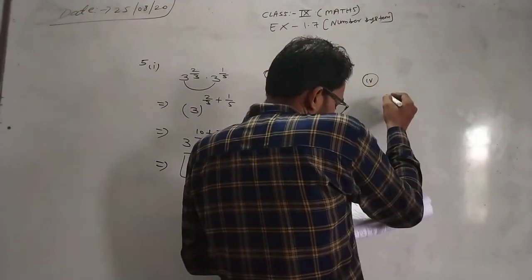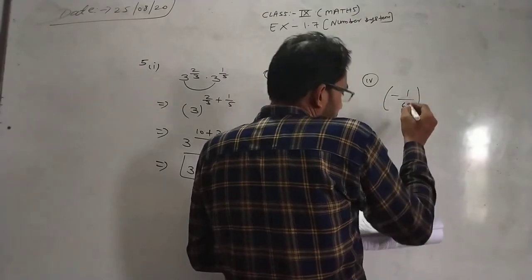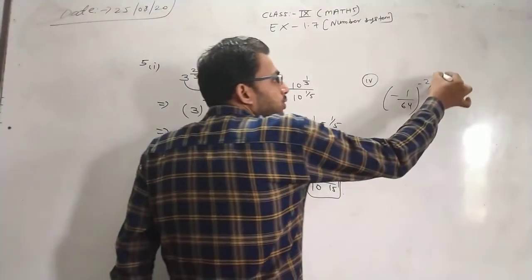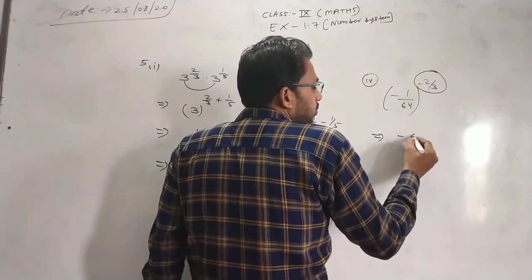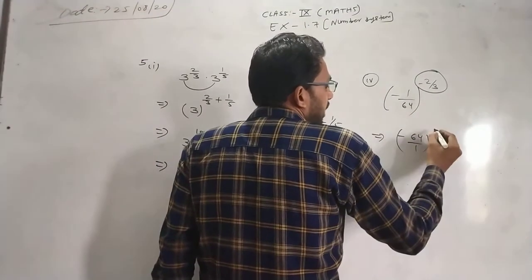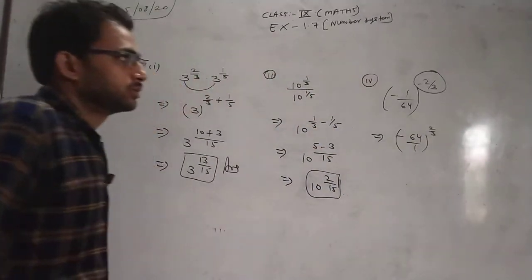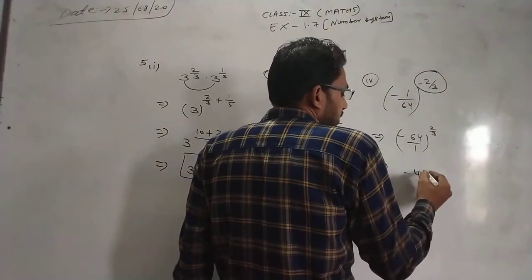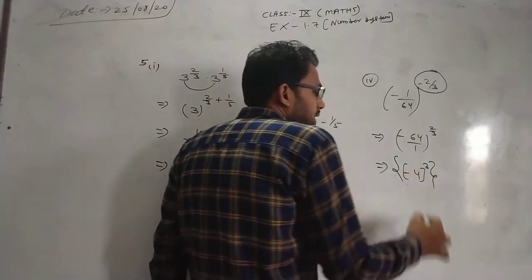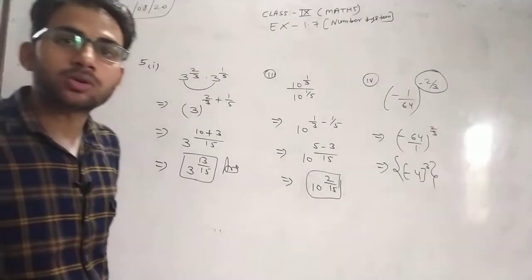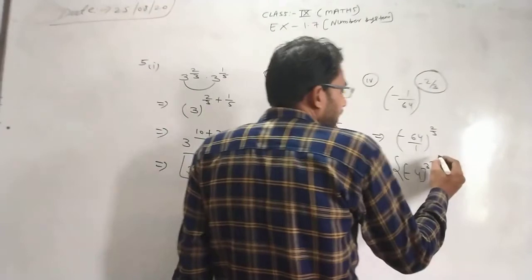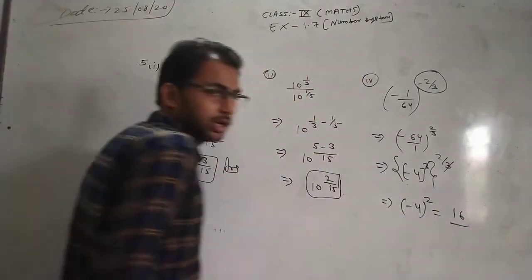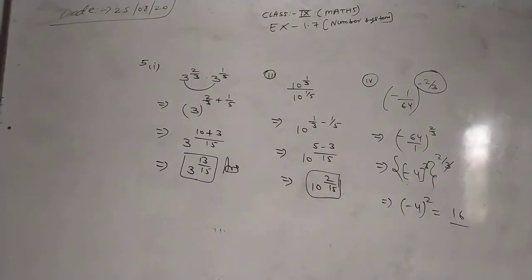The next sub-question: 1 upon 64 to power minus 2 by 3. When the power is minus, the first job is to flip it — bring 64 to the numerator, making the power positive: 64 to power 2 by 3. Now, what is the cube root of 64? That is 4. So the power is 2 by 3, which means you write minus 4 to power 2. You can write it simply using the cube root of 64 cubed.